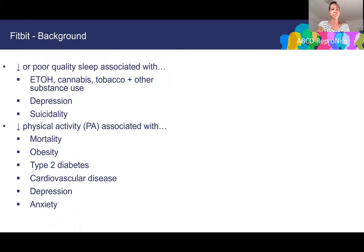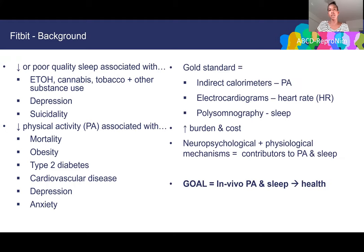Starting with Fitbit: decreased or poor quality sleep is associated with alcohol, cannabis, tobacco, and other substance use in youth, and also with depression and suicidality. Low levels of moderate to vigorous physical activity are associated with obesity, type 2 diabetes, depression, and anxiety, and there are really negative long-term outcomes like cardiovascular disease and even mortality. Gold standard measurements include indirect calorimeters for physical activity, electrocardiograms for heart rate, and polysomnography for sleep, but these are burdensome and costly.